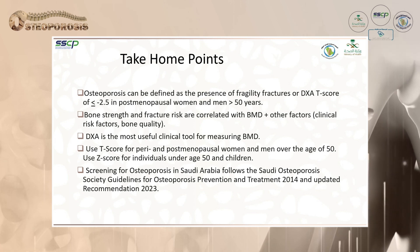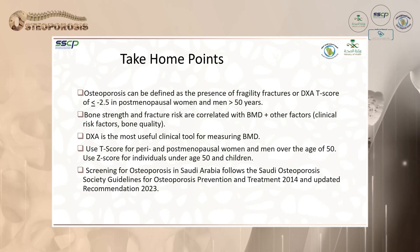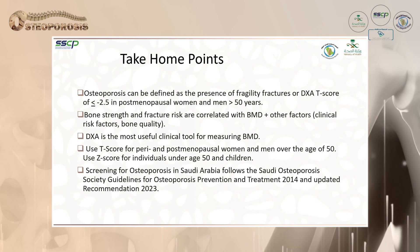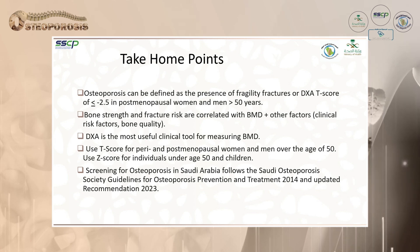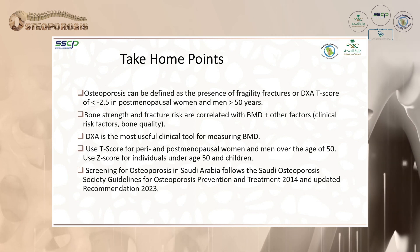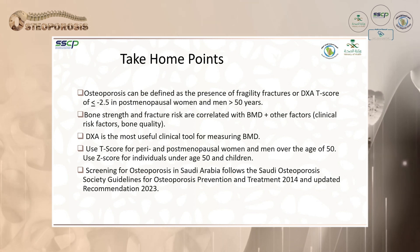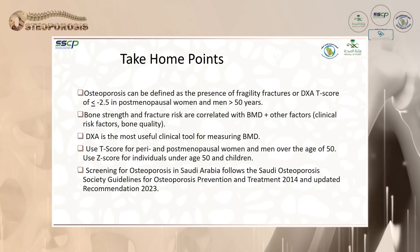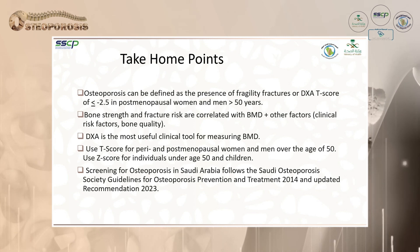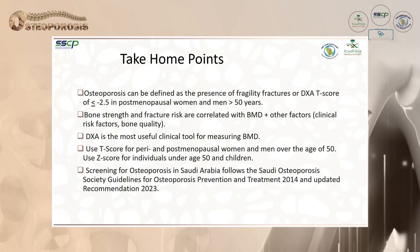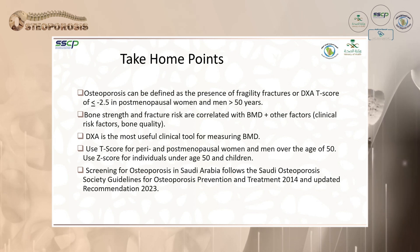Take-home points: Osteoporosis can be defined by the presence of fragility fracture or DEXA T-score less than minus 2.5 in postmenopausal women and men. Bone strength and fracture risk are correlated with BMD and other factors including clinical risk factors and bone quality. DEXA is the most useful clinical tool for measuring BMD. T-score is used for postmenopausal women and men over age 50, Z-score for individuals under 50 and children. Screening in Saudi Arabia follows the Saudi Osteoporosis Society Guidelines 2014 and updated 2023 recommendations.